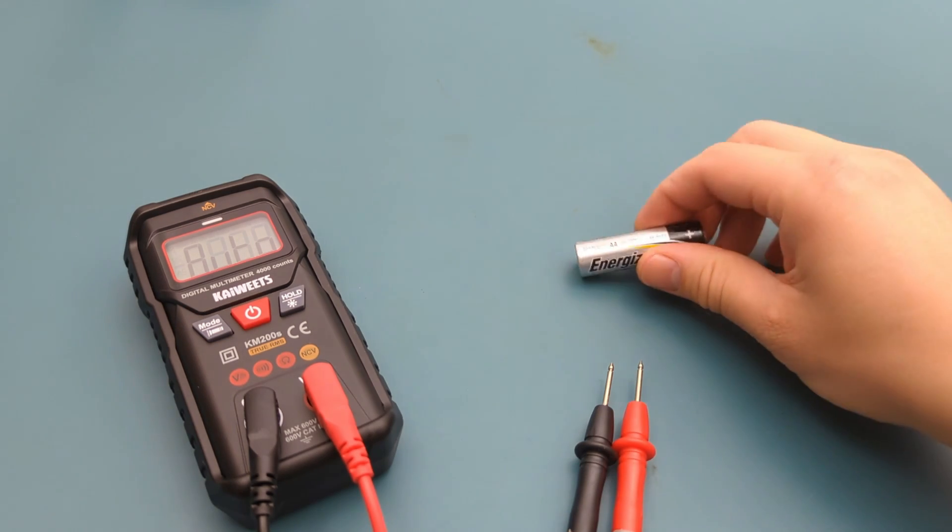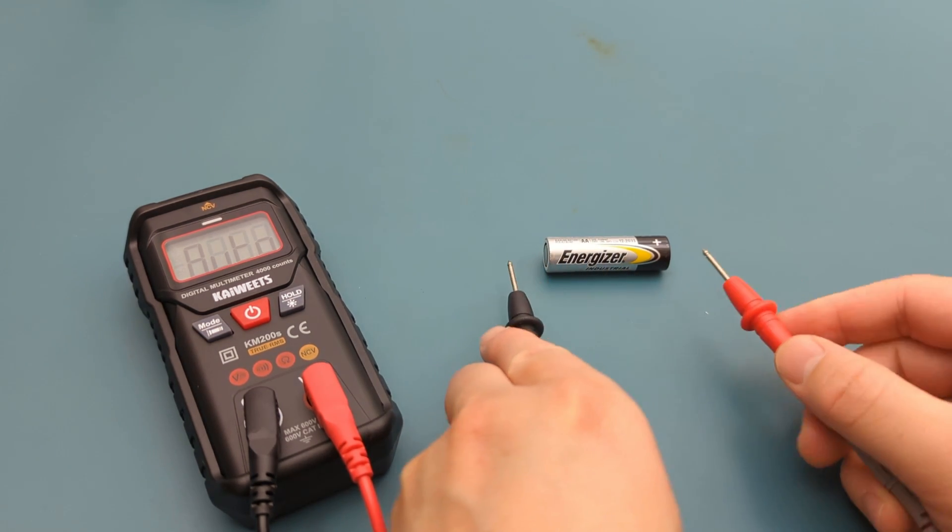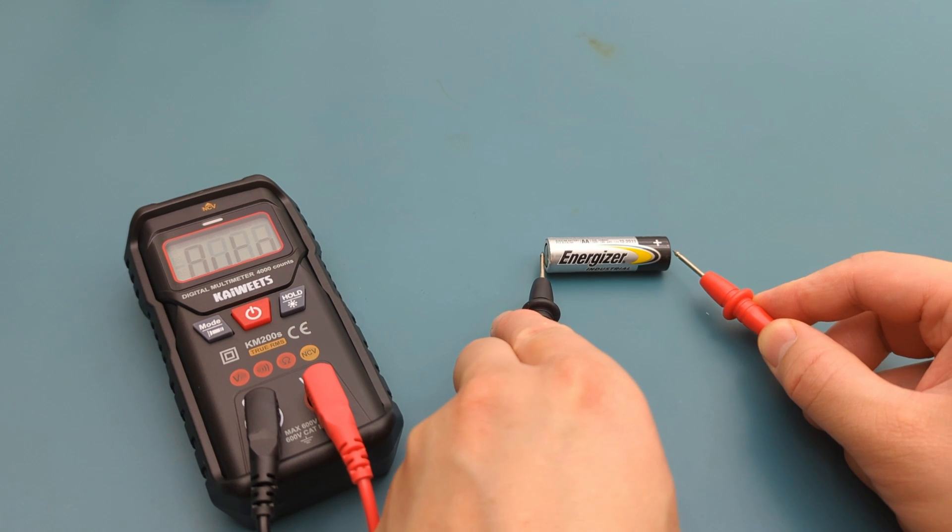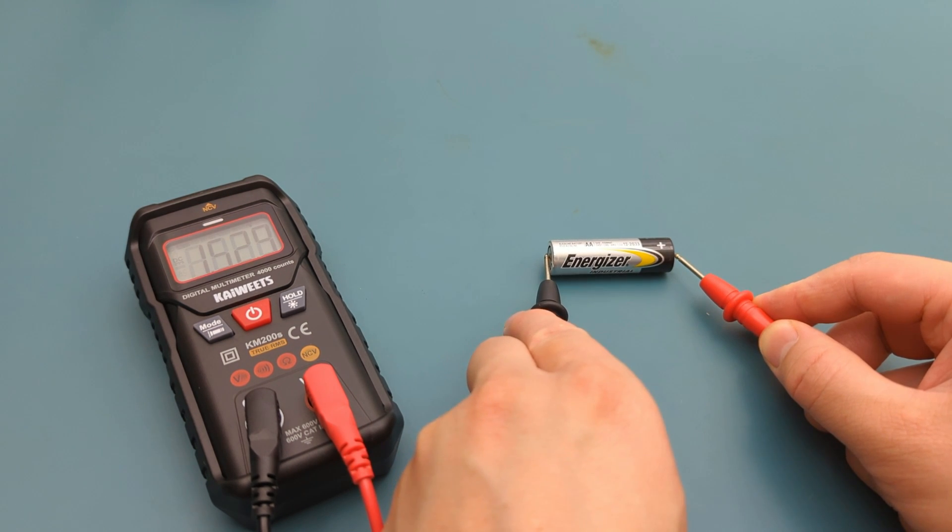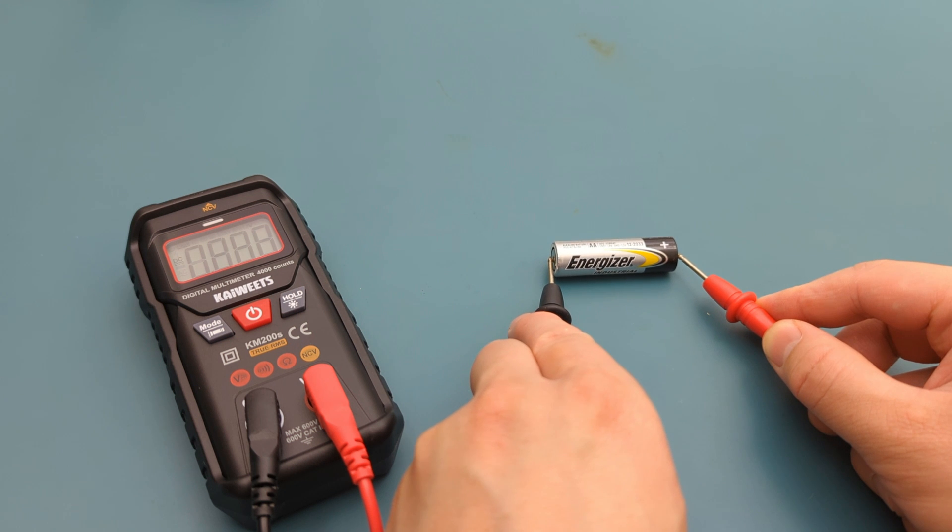Begin by checking the voltage of this AA battery. When I place the probes on the battery, the multimeter instantly detects that I'm measuring voltage. The reading is around 1.5 volts, as expected for a AA battery.